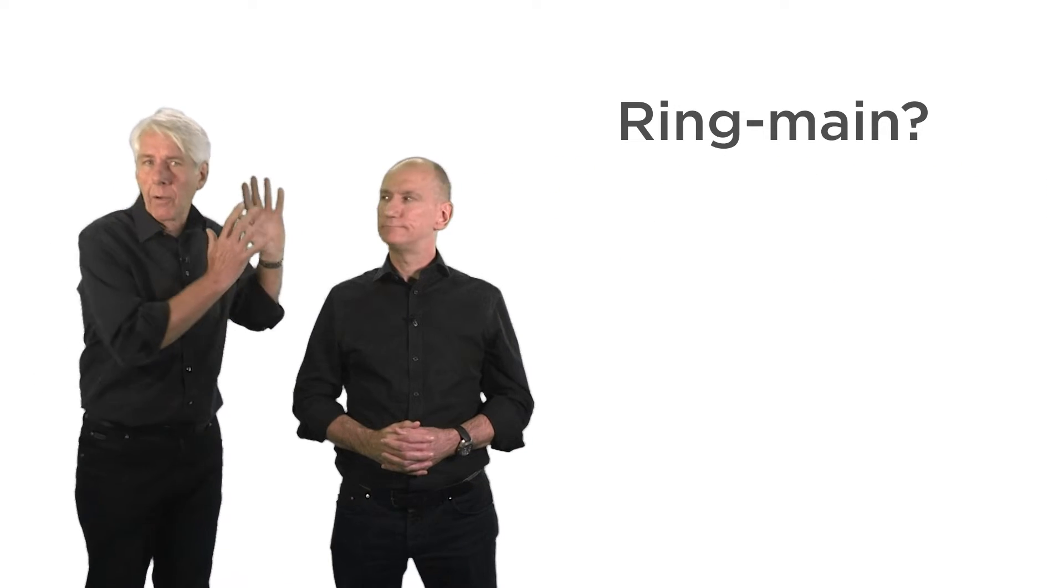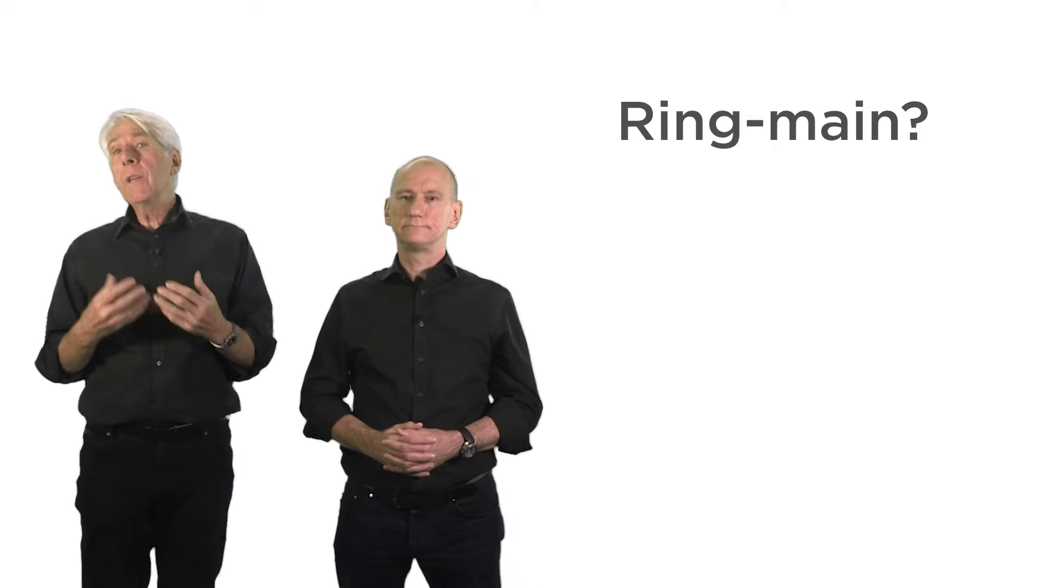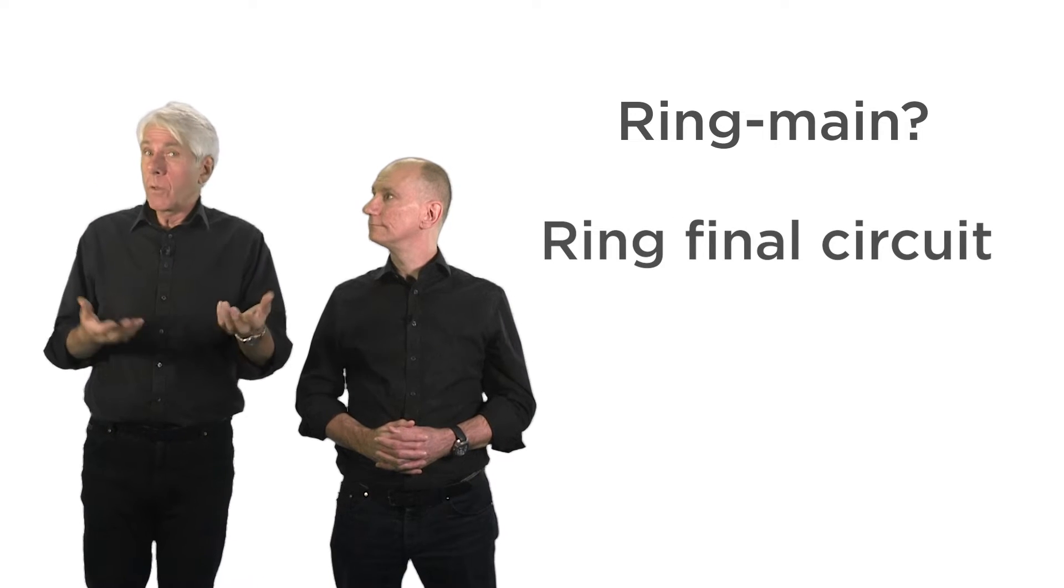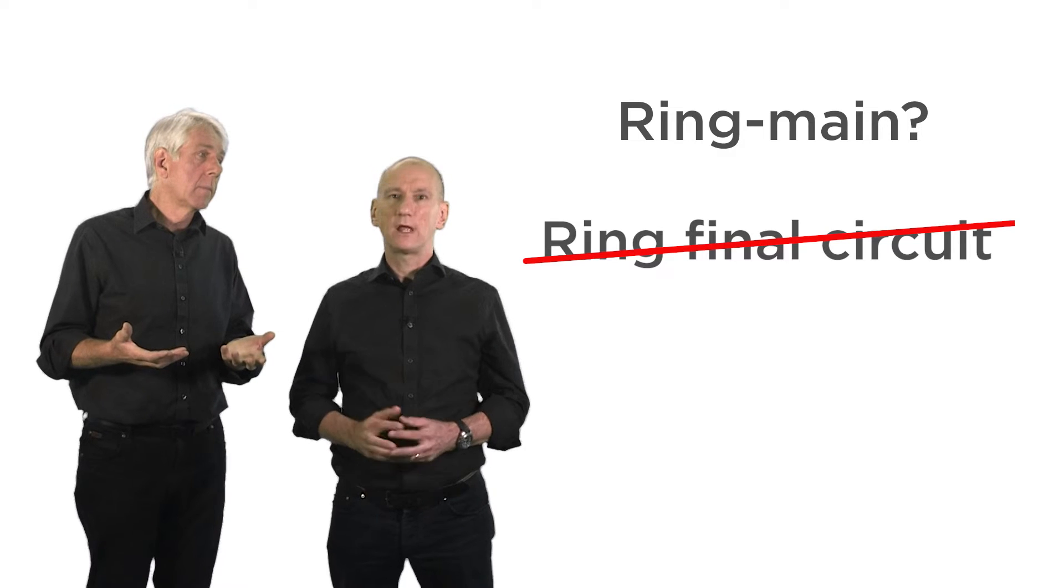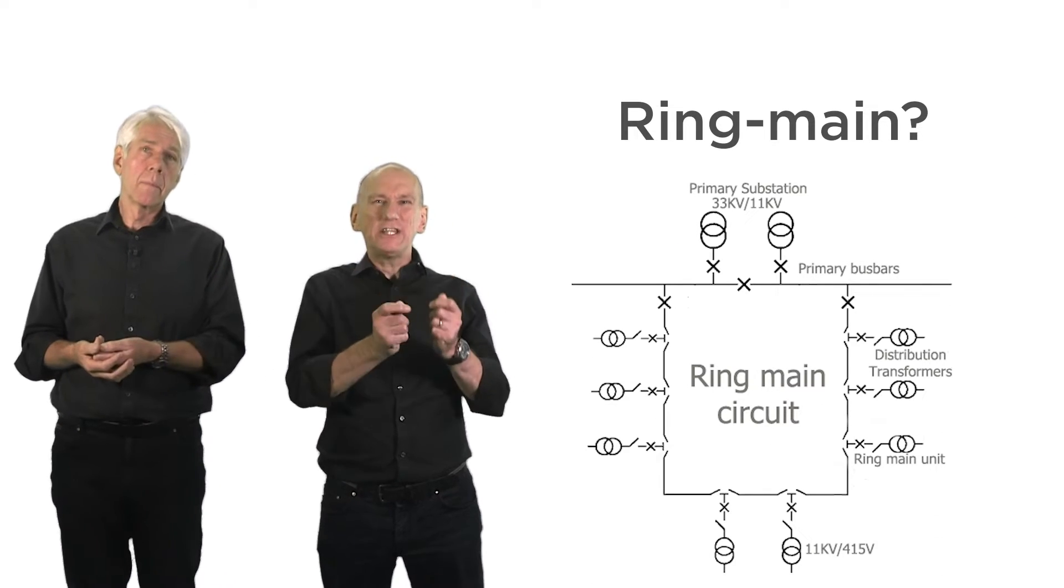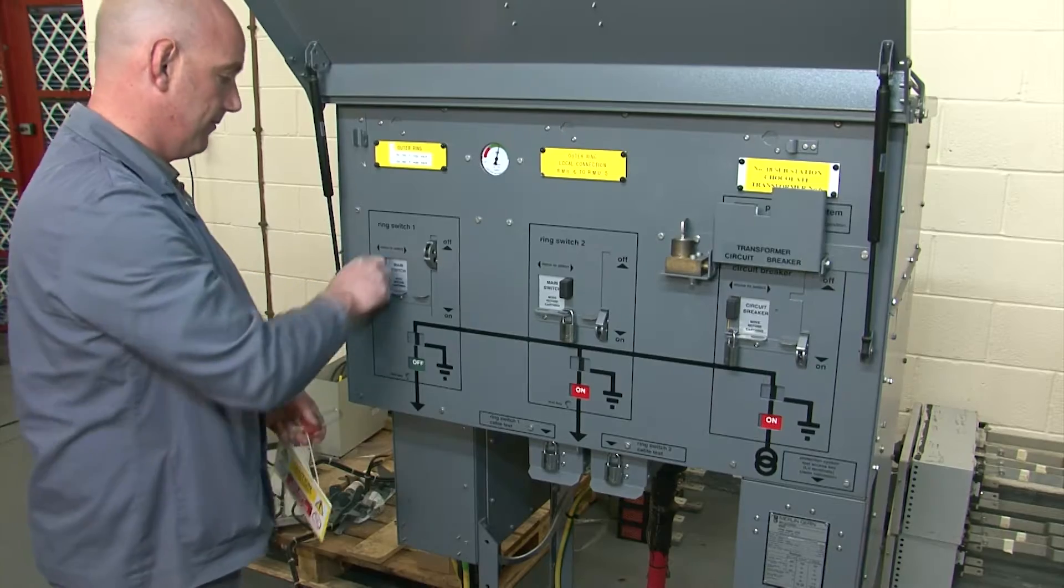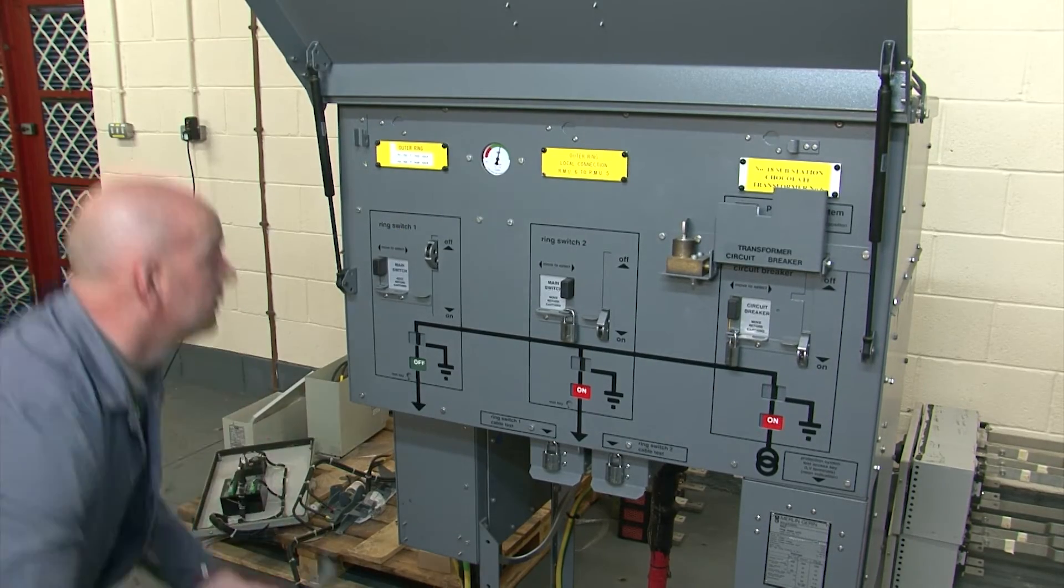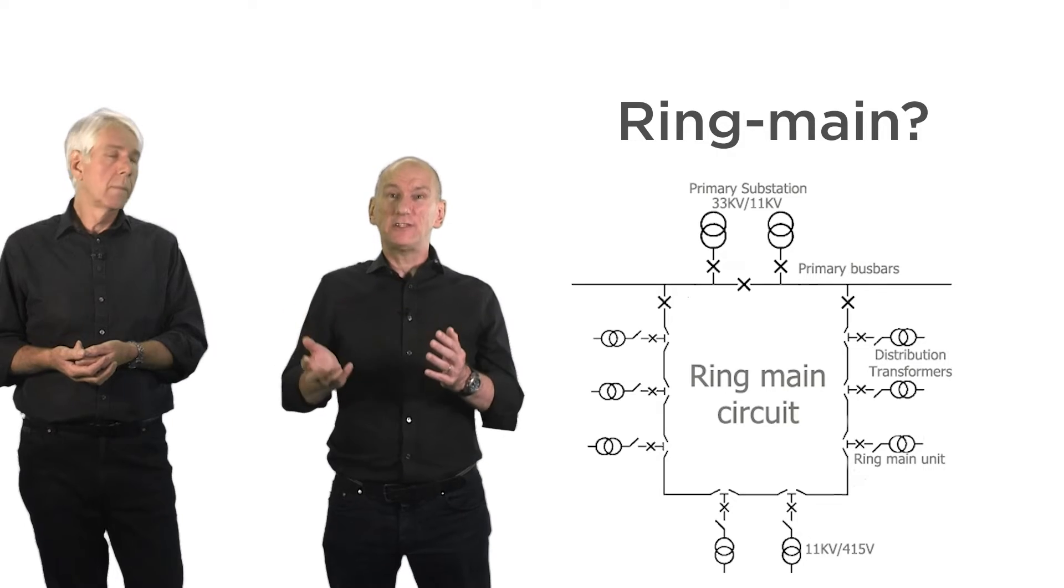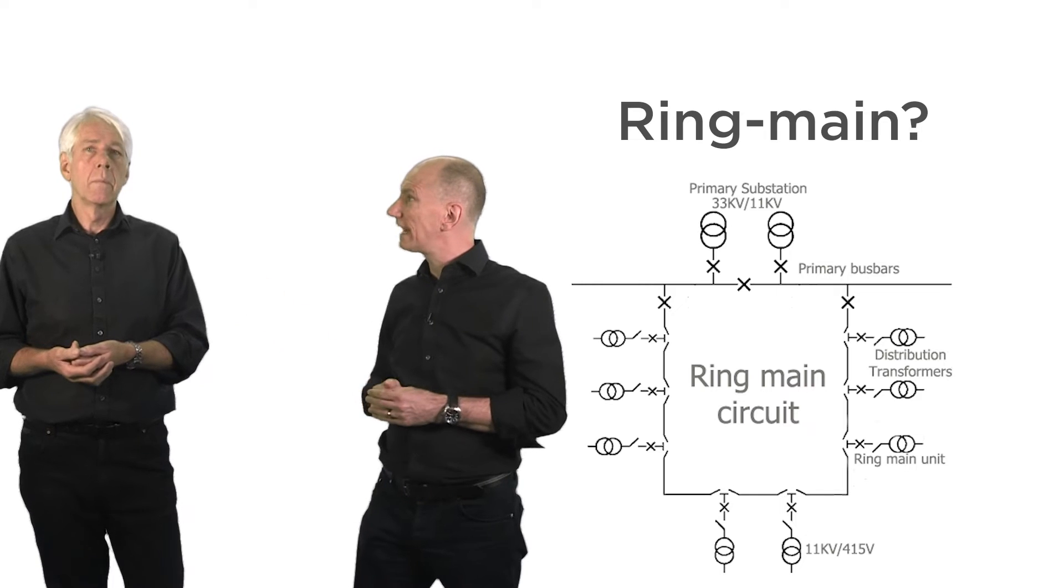So let's start with ring main. Now many of us, excluding Gary of course, have used this term when referring to a ring final circuit. So what is a ring main? A ring main is actually a term that's used to describe how HV cables are used to connect one transformer to another on or around the grounds of say a hospital or a university. So a HV ring main is something you're not seeing in your lounge.